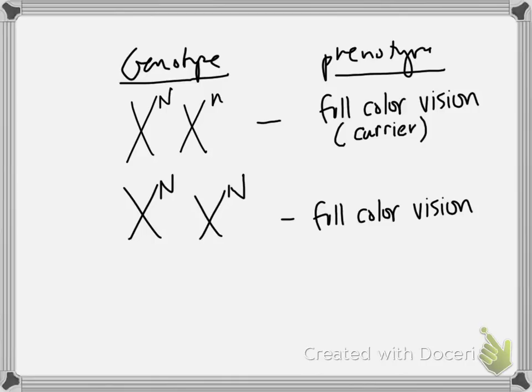My husband would never be able to be a pilot if that was his dream. You can't be an engineer on a railroad. So we've got somebody who is female, full-color vision, but a carrier for colorblindness. Somebody who is female, full-color vision, not a carrier. In general, how many copies of a recessive allele do you have to have to be affected by the condition? Two, usually, right?